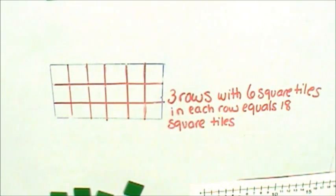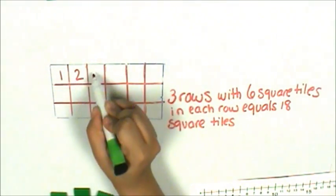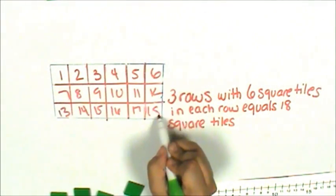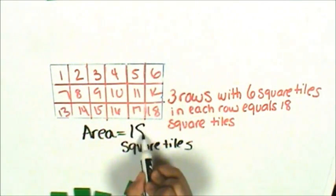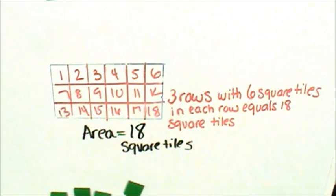If I count each square, I can verify that I have 18 square tiles. One, two, three, four... 18 square tiles. The area of this rectangle is 18 square tiles.